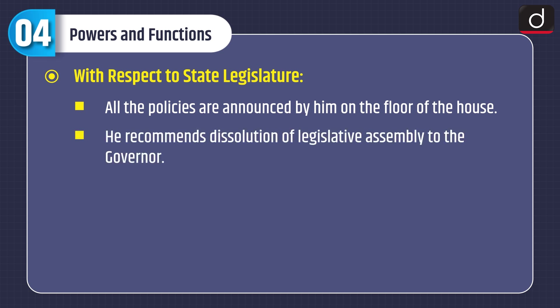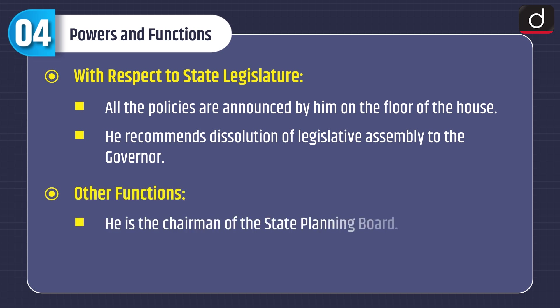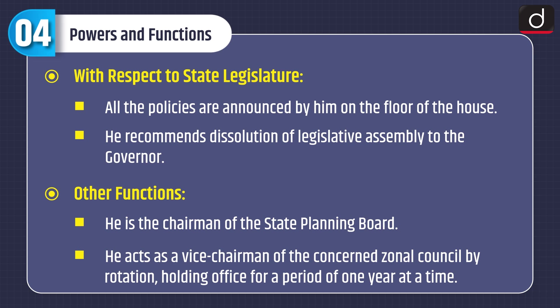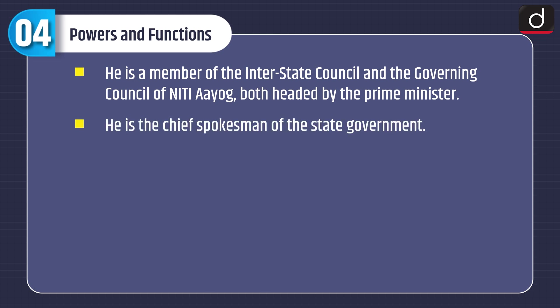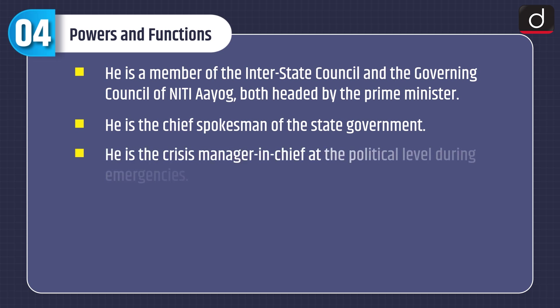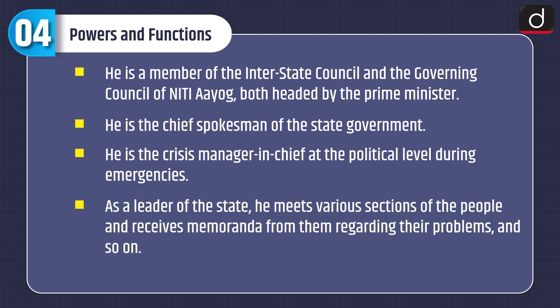As for other functions, the Chief Minister is the chairman of the State Planning Board. He acts as vice-chairman of the concerned Zonal Council by rotation, holding office for a period of one year at a time. He is a member of the Interstate Council and the Governing Council of NITI Aayog, both headed by the Prime Minister. He is the chief spokesman of the state government, the crisis manager-in-chief at the political level during emergencies, and the political head of the services.